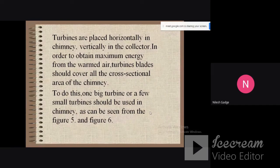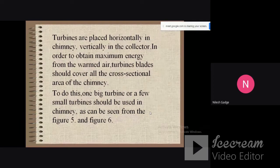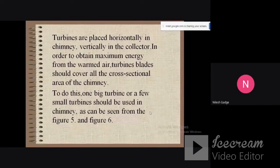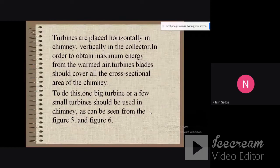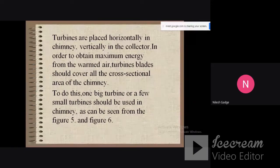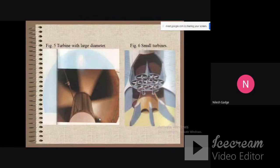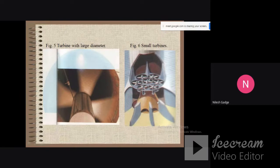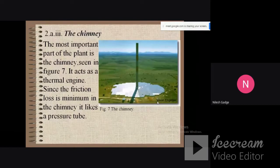Turbines are placed horizontally in the chimney, vertically in the collector, in order to obtain maximum energy from the warmed air. Turbine blades should cover all the cross-sectional area of the chimney. To do this, one big turbine or a few small turbines should be used in the chimney, as shown in the figure. Turbines with large diameter or small diameter turbines can be used.